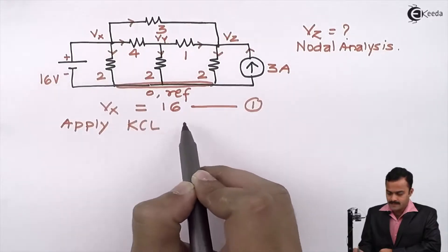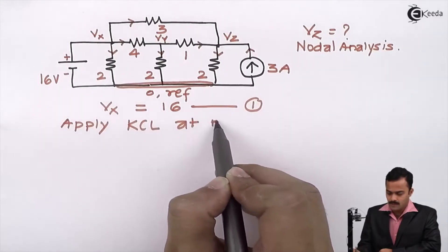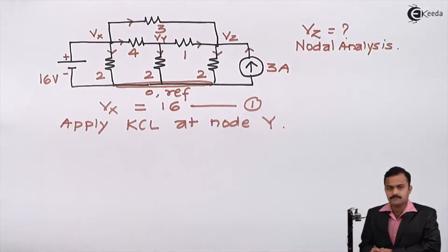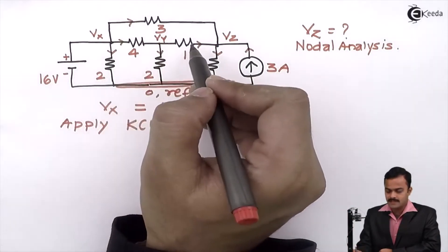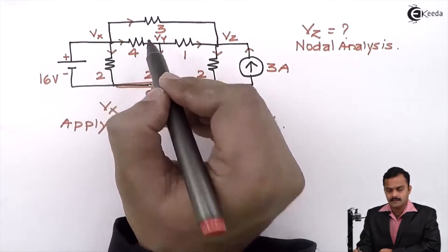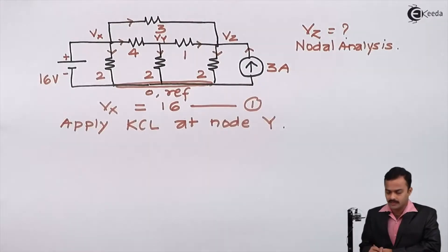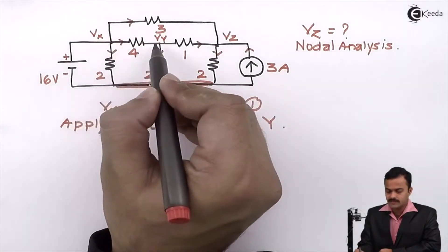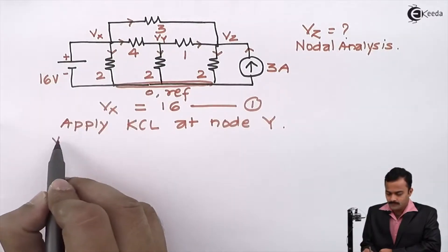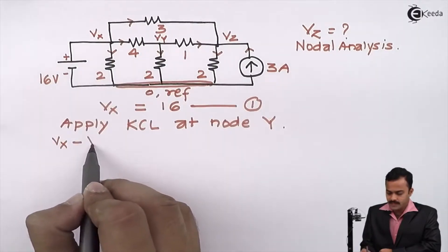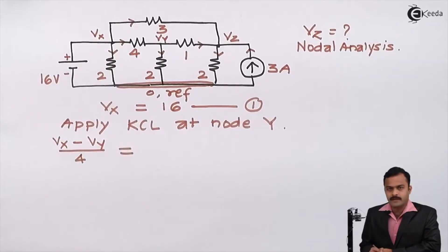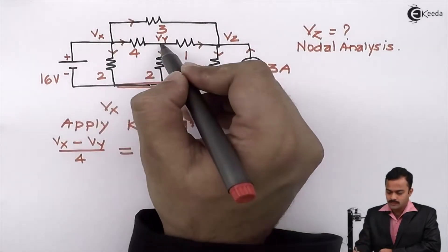Applying KCL at node Y: at node Y, 3 branches are connected. One branch has incoming current and the remaining two have outgoing currents. For the 4 ohm branch, the current is Vx minus Vy divided by 4.